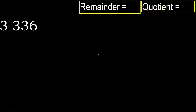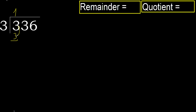336 divided by 3. 3 is not less, therefore with 3. 3 multiplied by which number is nearest to 3, but not greater. 3 multiplied by 2 is 6 — 6 is greater. Multiplied by 1 is 3, is not greater. Subtract: 3 minus 3 is 0.